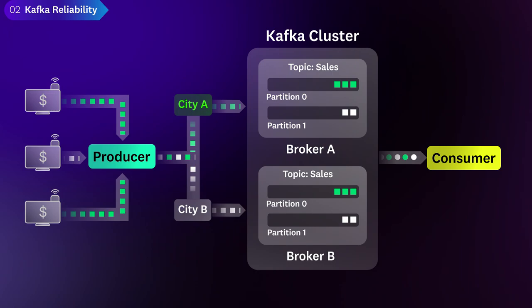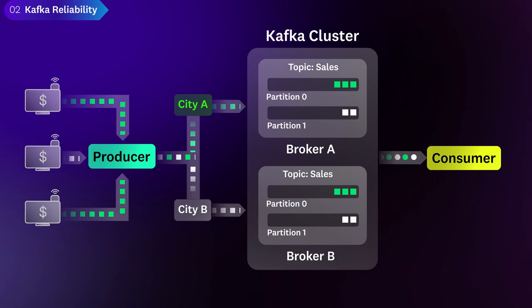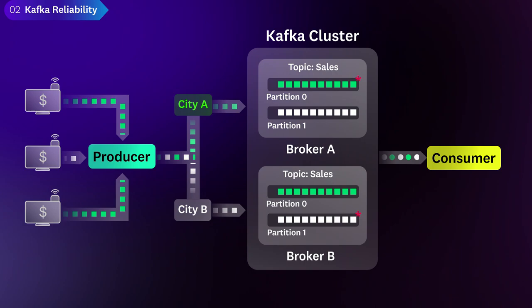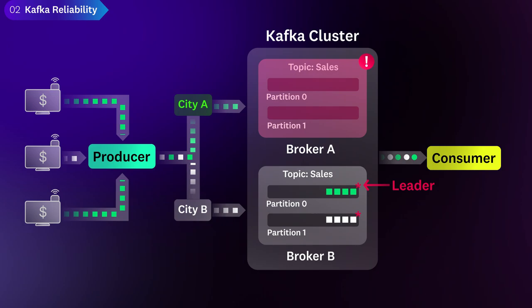This ensures that the brokers write sales from the same city to a specific partition. Each partition gets replicated across a cluster or group of multiple Kafka brokers. Within each partition, one broker acts as the leader and the remaining brokers are followers. The leader handles all the read and write requests for the partition, but if the leader goes down, a follower automatically takes over as the leader. With this fail-safe mechanism, you can reliably stream and store data without having to worry about routine outages.